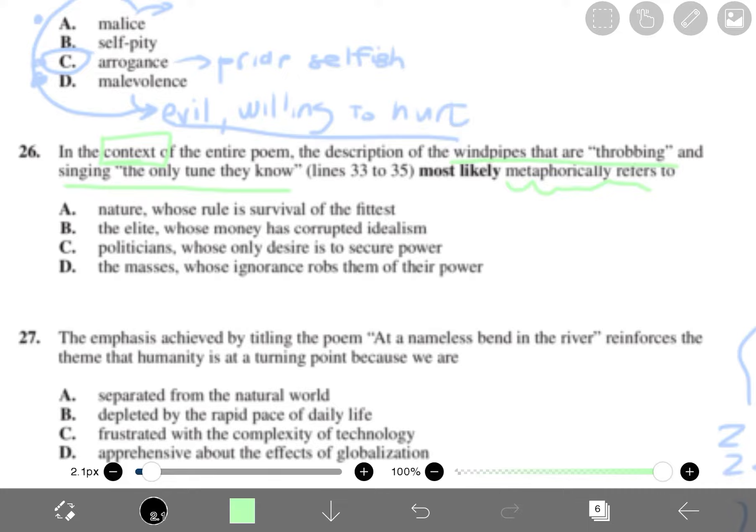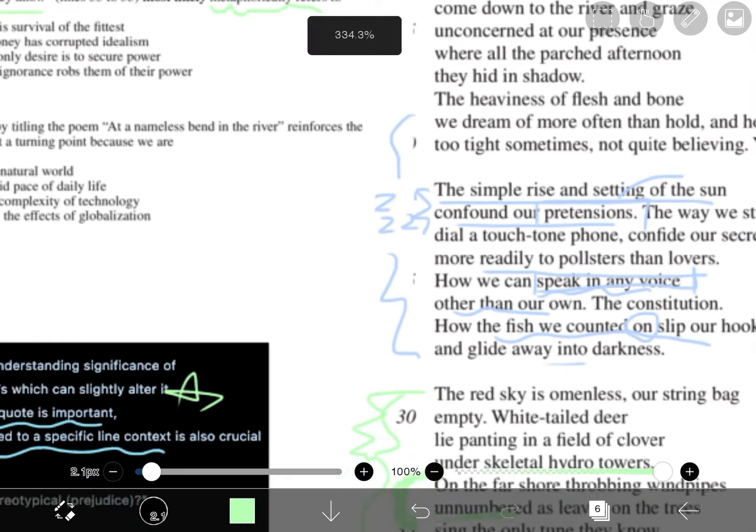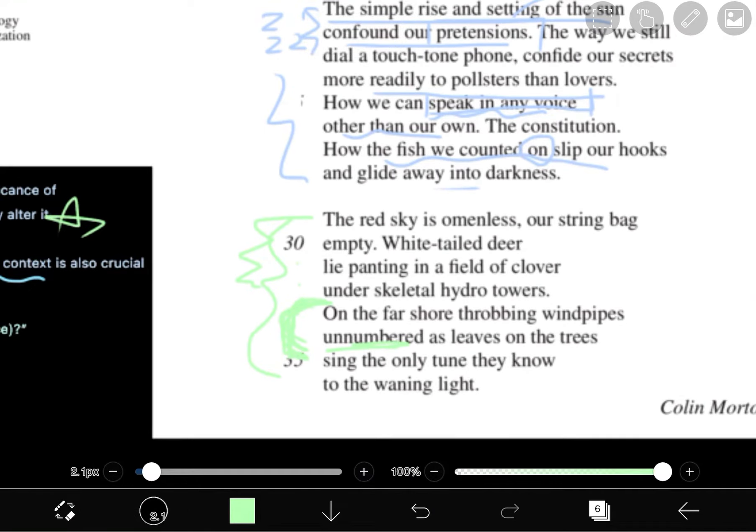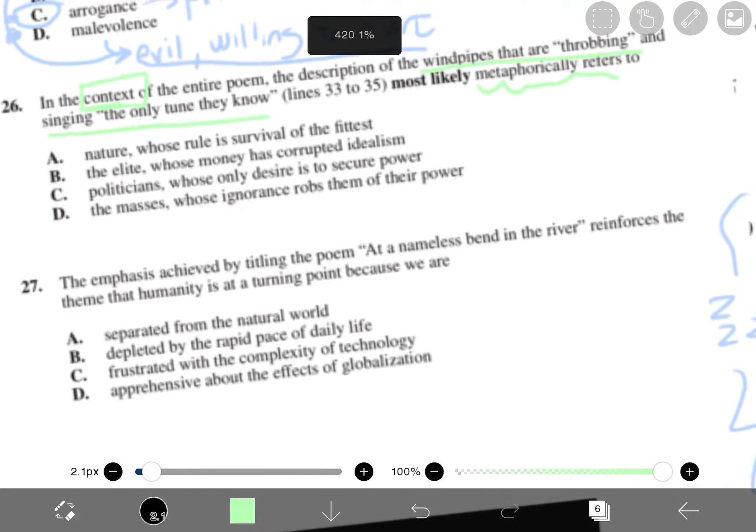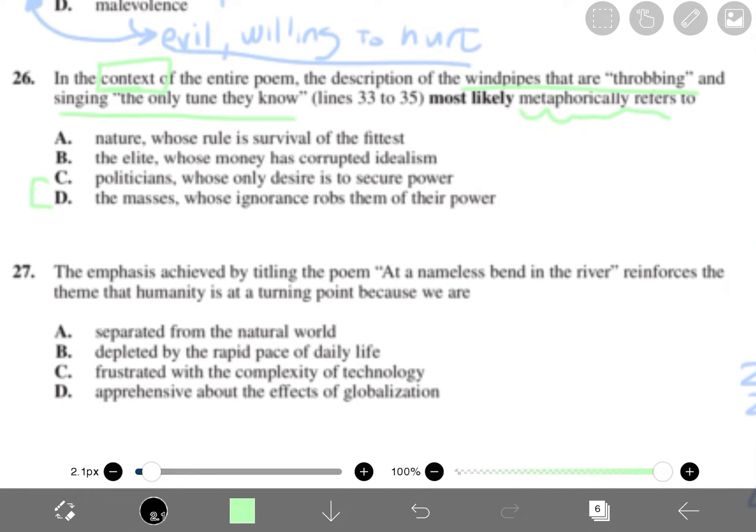Nature whose rule is survival of the fittest. Windpipes are not so much about nature because it's man-made. So we're going to look at B. We're not going to eliminate A because it's awful to eliminate the right answer. So we're going to just put that to the back and see if there are other right answers. No elimination. The elite whose money has corrupted idealism. I'm sorry, but there is no mention of money here. We know we have towers, but windpipes, that is cheap. There is no money and corruption. Now these two might seem really close.